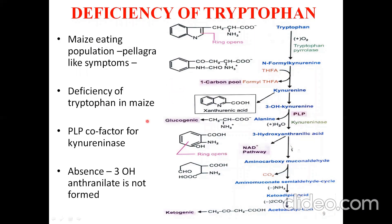PLP is a cofactor for kynureninase, so in pyridoxine (B6) deficiency, niacin is also not synthesized — B6 is needed for the synthesis of B3. In pyridoxal phosphate deficiency, there is accumulation of 3-hydroxykynurenine and kynurenine; the block causes kynurenine to be converted to xanthurenic acid, which is excreted in the urine.